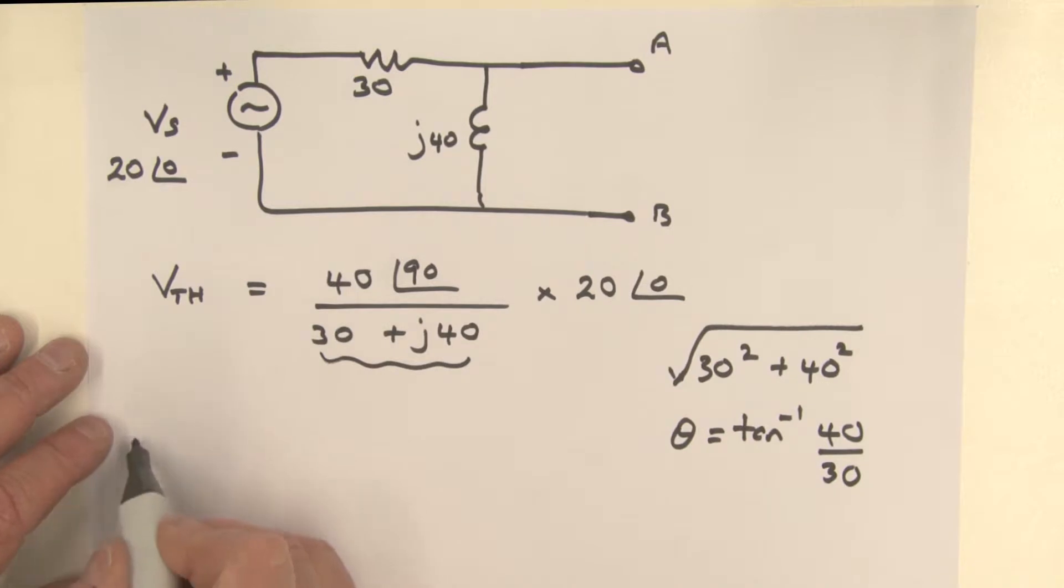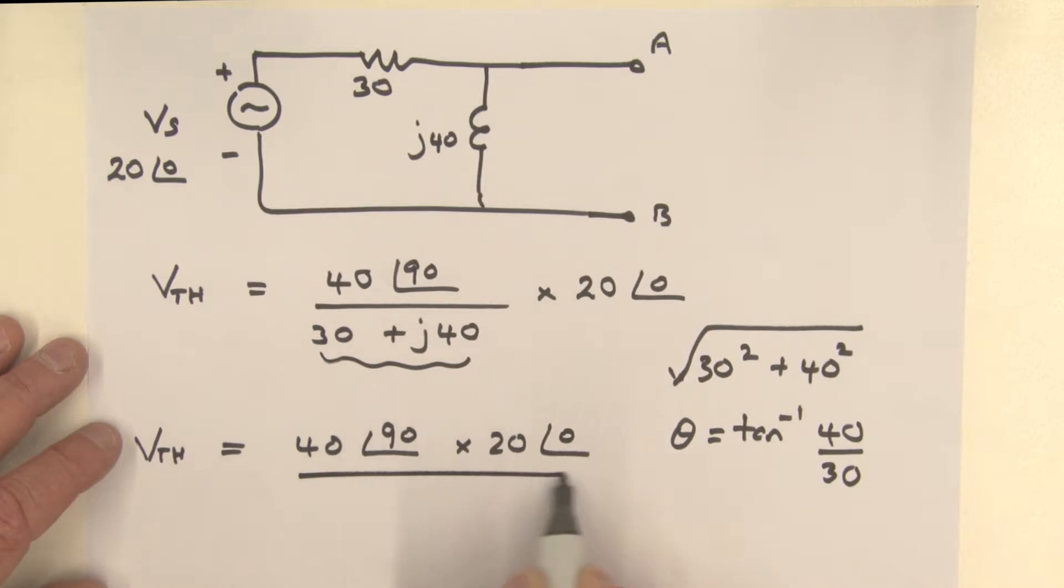Let's rewrite that now. V Thevenin is equal to 40 angle 90 multiplied by 20 angle zero divided by, this now in its polar form, 50 at an angle of 53.13 degrees. We can now simply multiply 40 by 20 divided by 50, which gives us 16. And our angle is, if we bring this angle up to the numerator it becomes minus 53, so we take 53 from the 90, which gives us 36.87 degrees, and that is our V Thevenin.